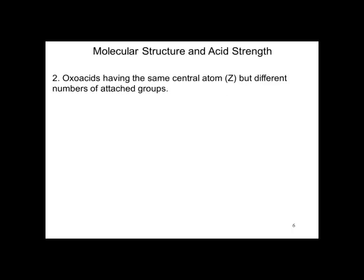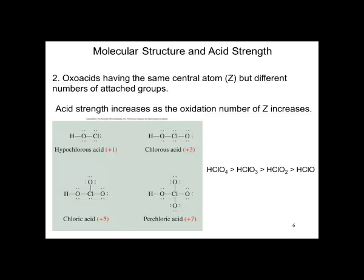With oxoacids having the same central atom but different number of attached groups, the acid strength increases as the oxidation number of Z increases. Here is an example of hypochlorous, chlorous, chloric, and perchloric acid. Notice that the more oxygens you have, the stronger the acid. HClO4 is stronger than HClO3, etc.